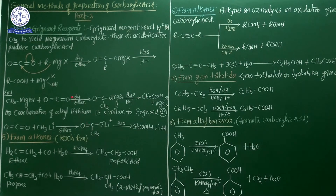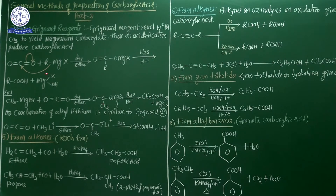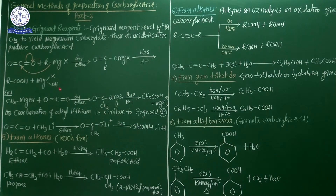When carbon dioxide is bubbled — or dry ice — through an ethereal solution of the Grignard Reagent, carboxylic acid is obtained. Important point: whenever you prepare carboxylic acid using the Grignard Reagent, carbon dioxide is a must.